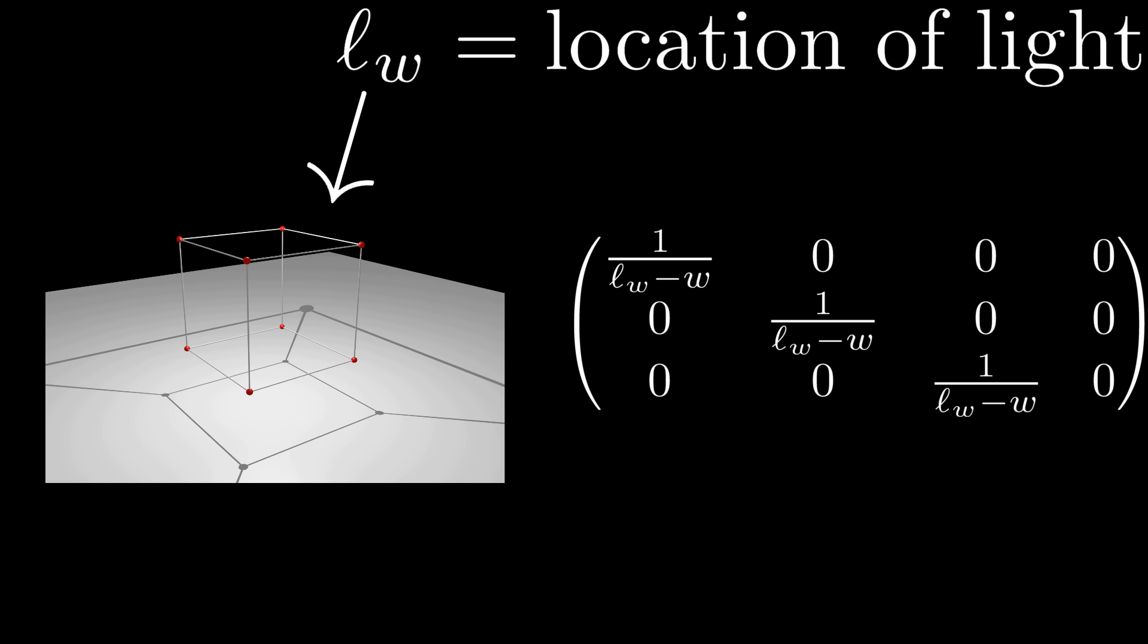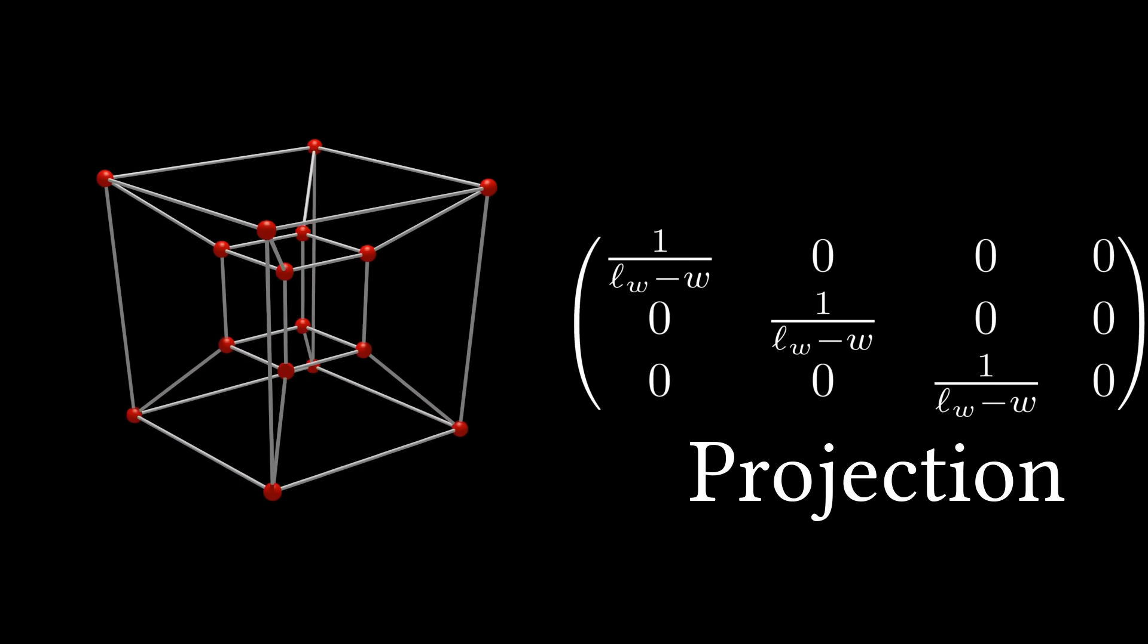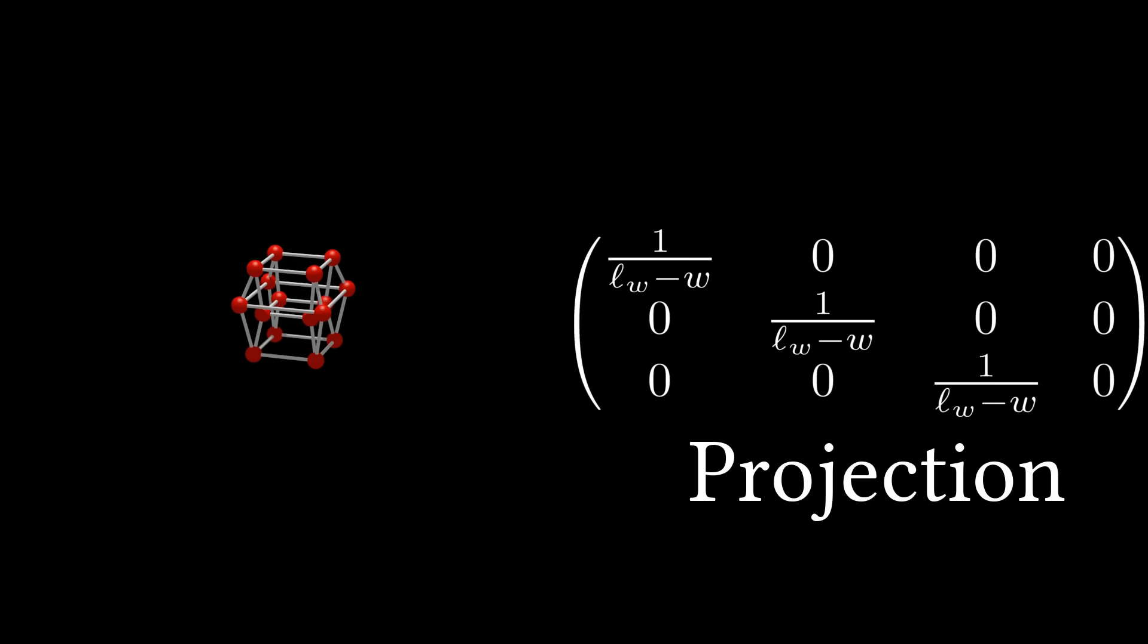Now, here's the cool part. By varying our LW parameter, the location of our light source along the W axis, we can see dramatically different visualizations, even though the rotations themselves have not changed.